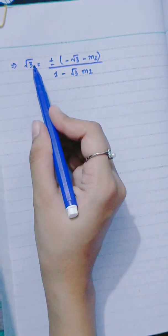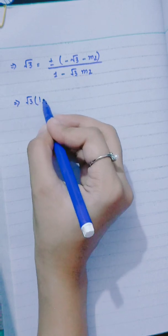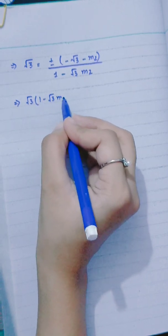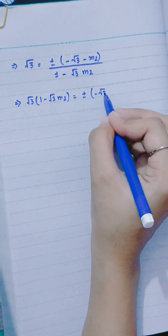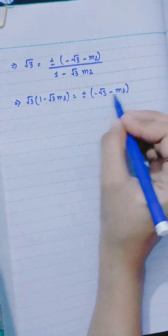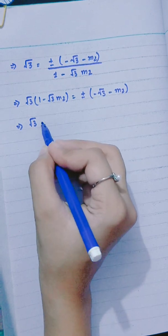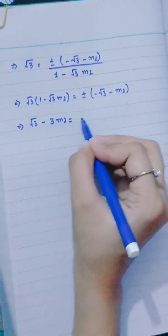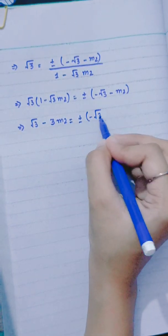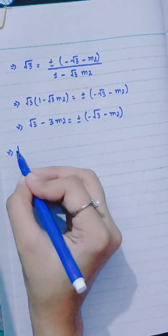Multiplying both sides: √3(1 - √3M2) = ± (-√3 - M2). This gives √3 - 3M2 = ± (-√3 - M2).